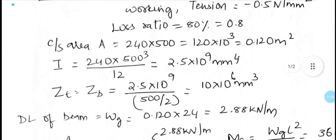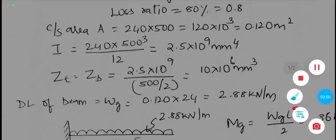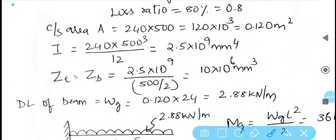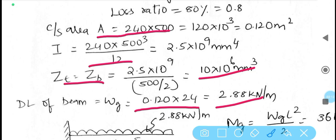Find out the cross sectional area, moment of inertia by applying the basic general expressions. Calculate A, calculate I, calculate Z as BD square by 6, and also find out the dead load as area into density.